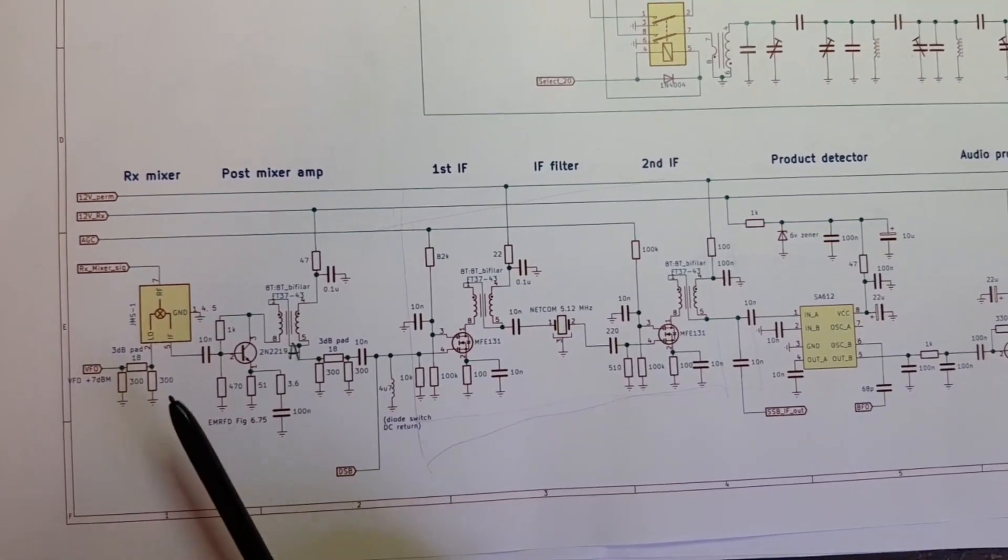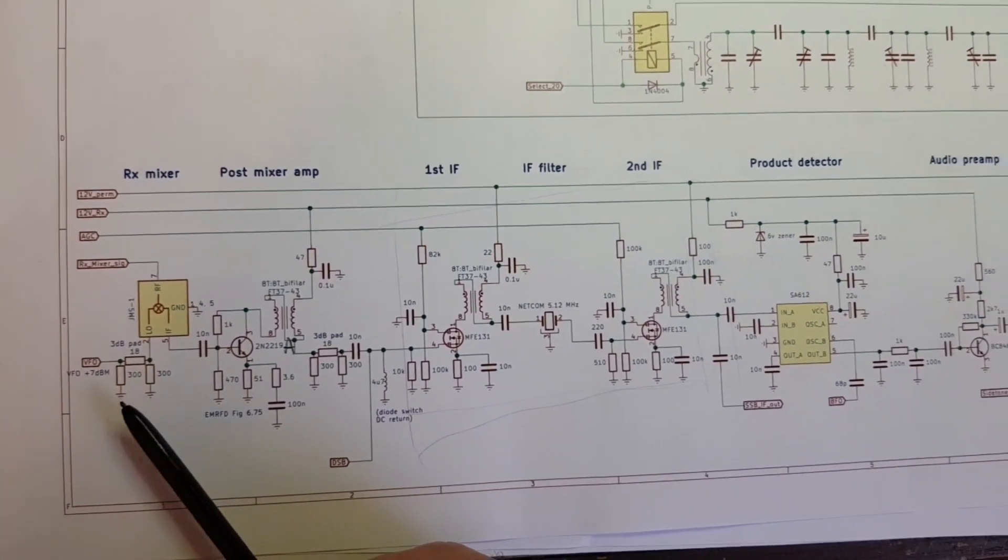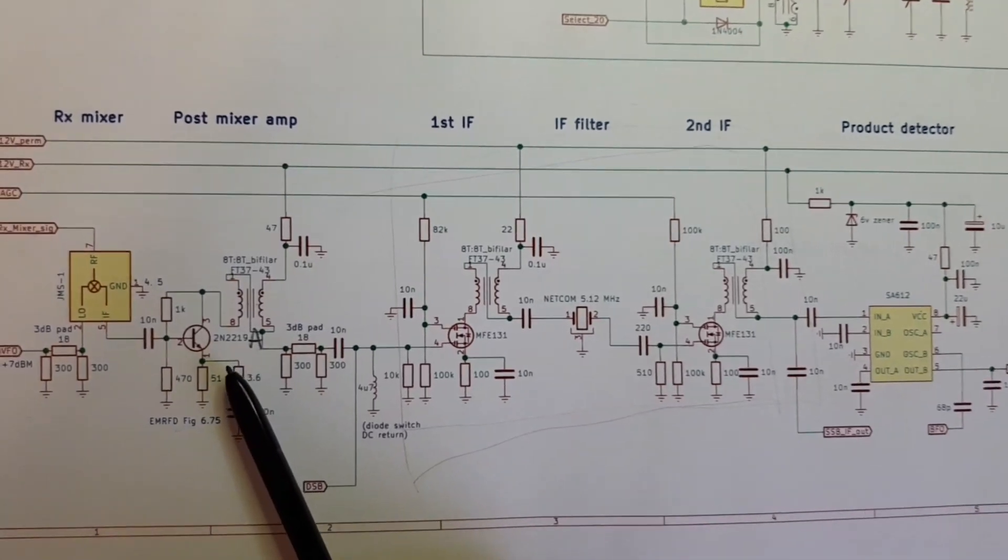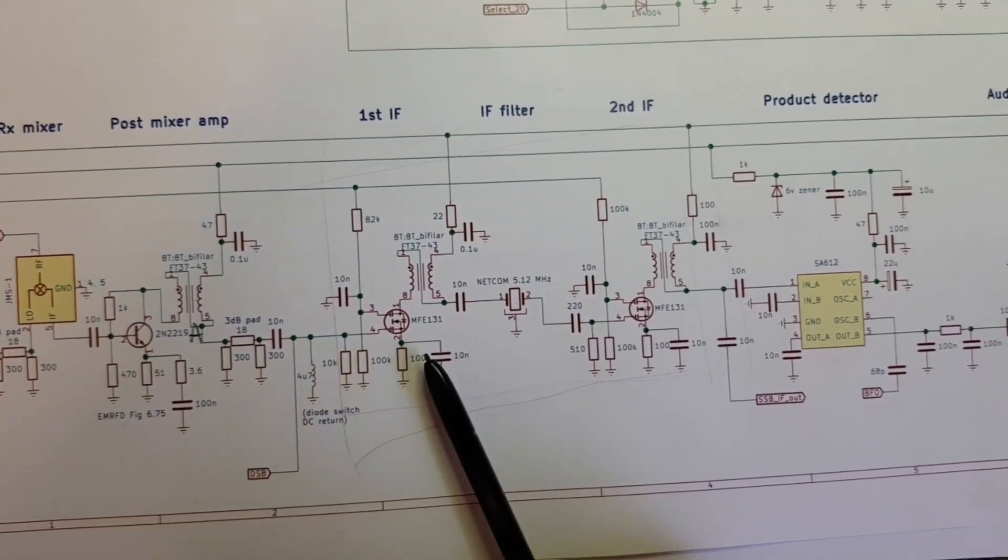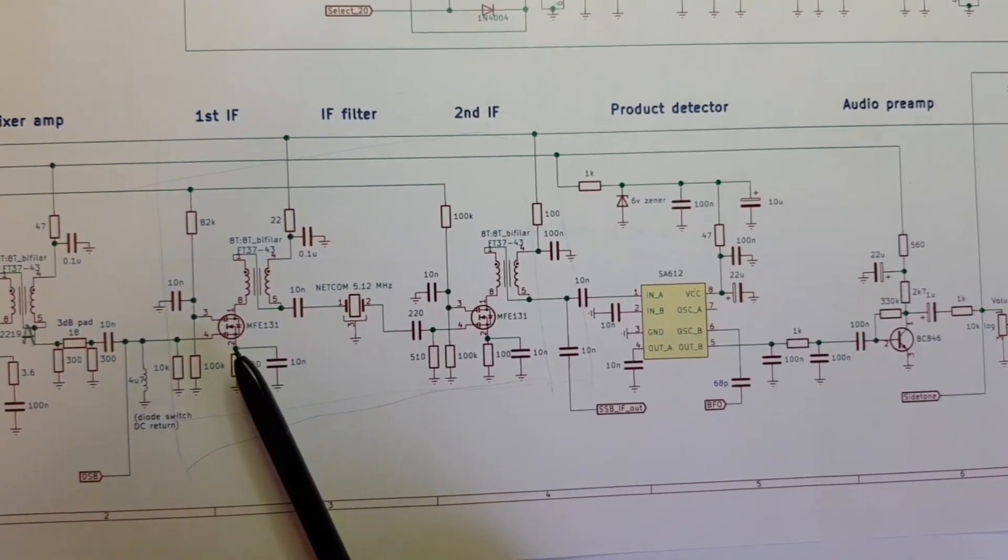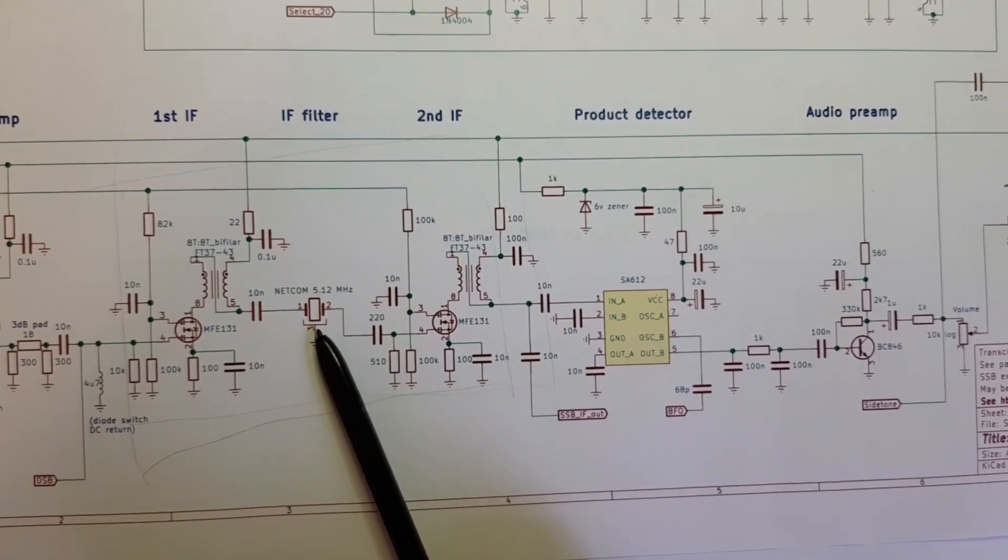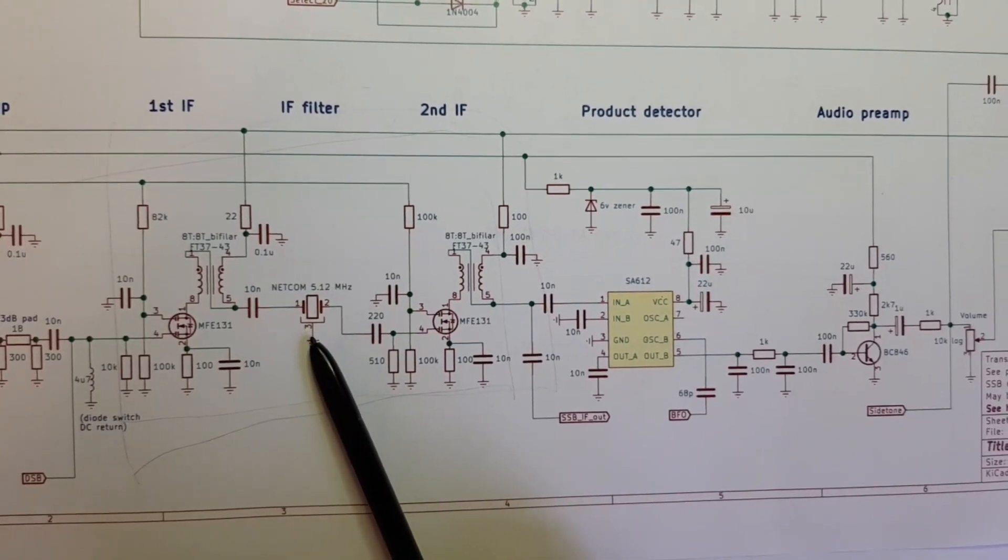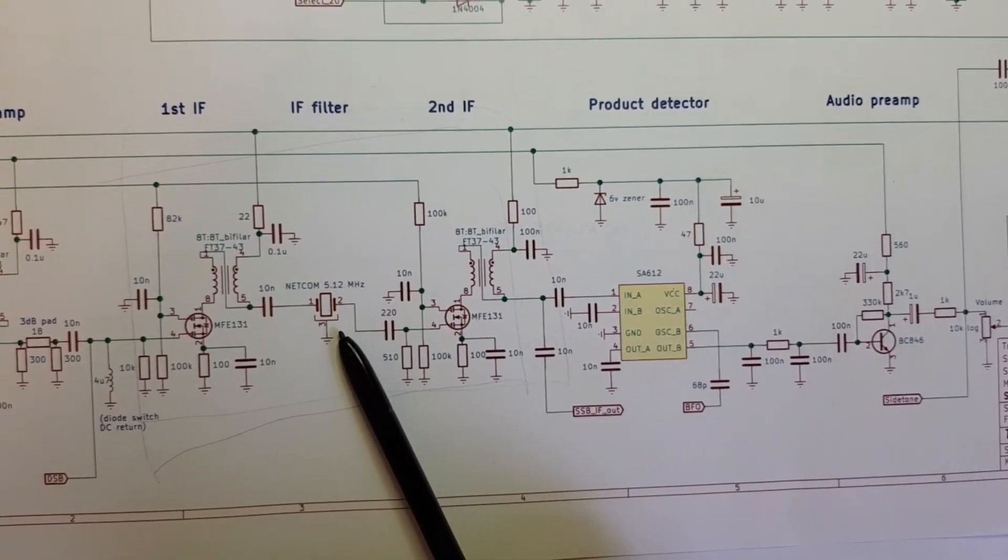The rest of the receiver is completely conventional. So a diode ring mixer, a post mixer amplifier, then into the IF stage, two dual gate MOSFETs with a NETCOM 5.12 megahertz crystal filter.